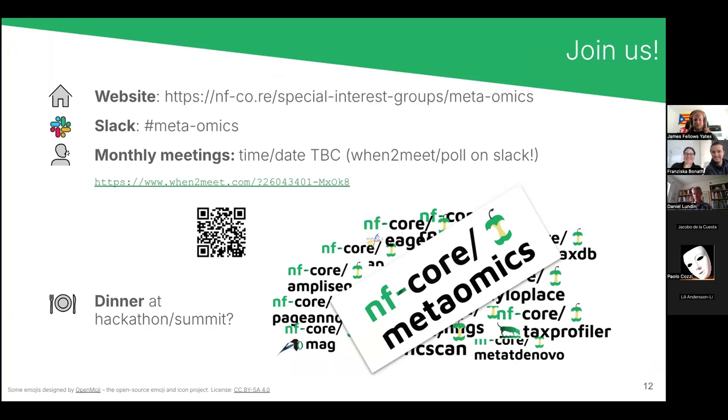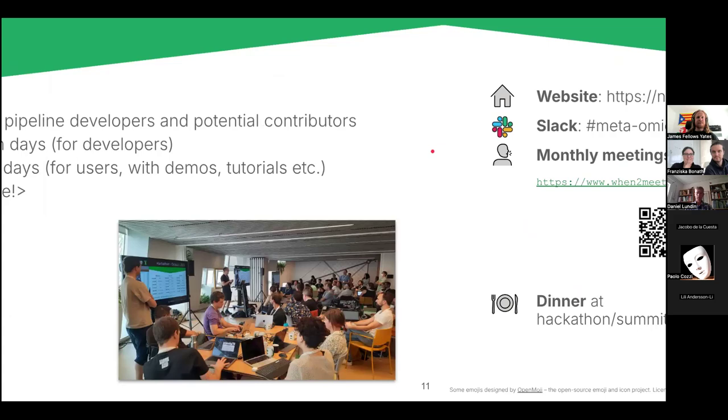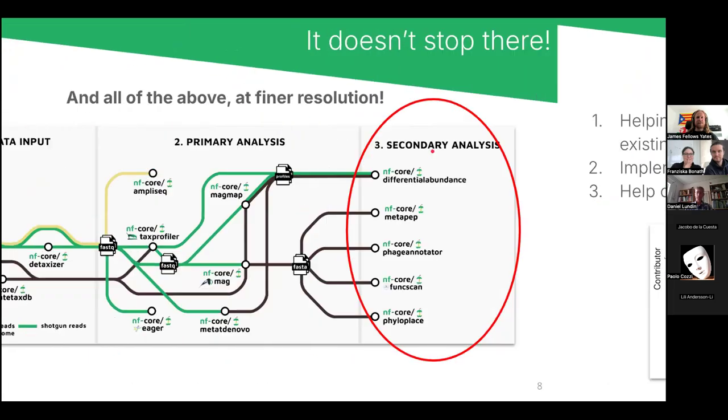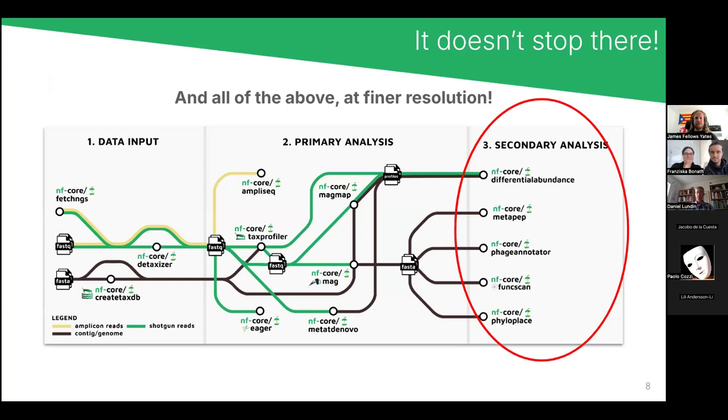I have a question. Yes. If you go back to your secondary analysis slide. Yes, here. So you said, for instance, we can take the results from the tax profiler and then we can run the secondary analysis. But it's very often, for instance, the classification results from a tax profiler and they are false positives. Are there any secondary analysis that actually check that? Because if they are false positives, it's difficult to run, for instance, phage annotator or something else because they are false positives.